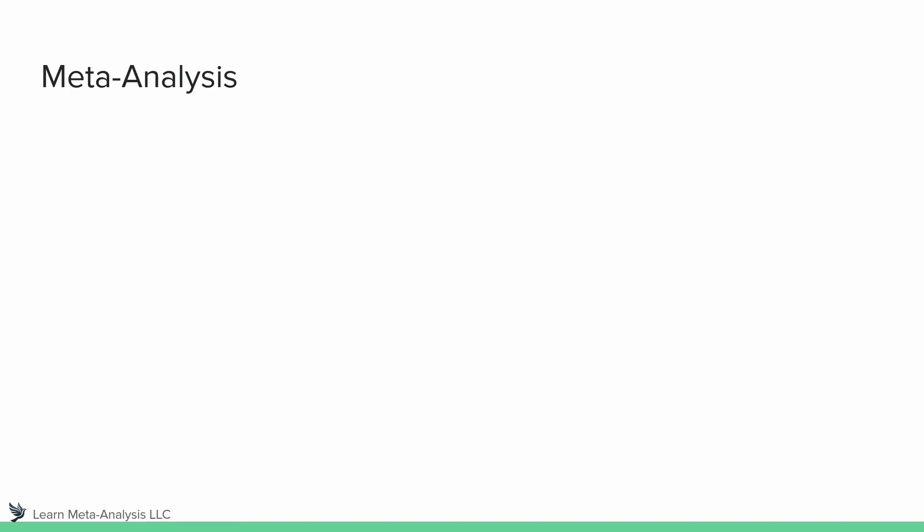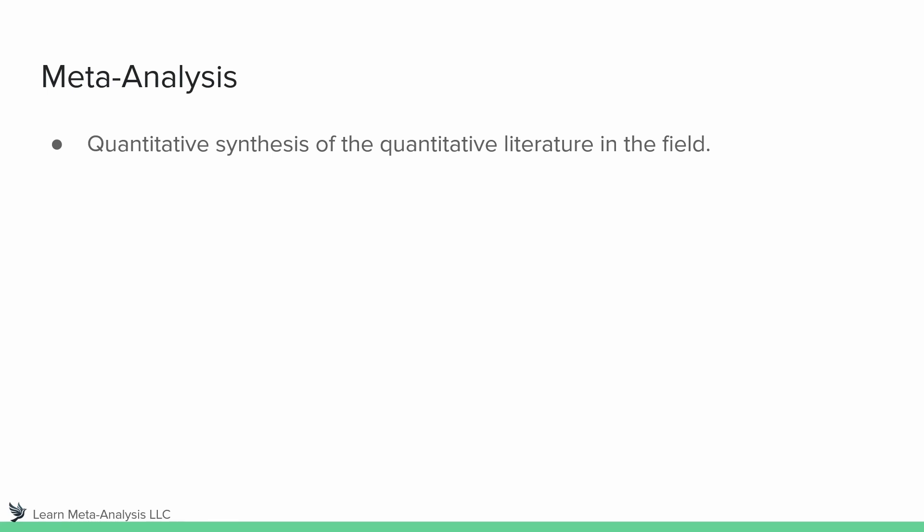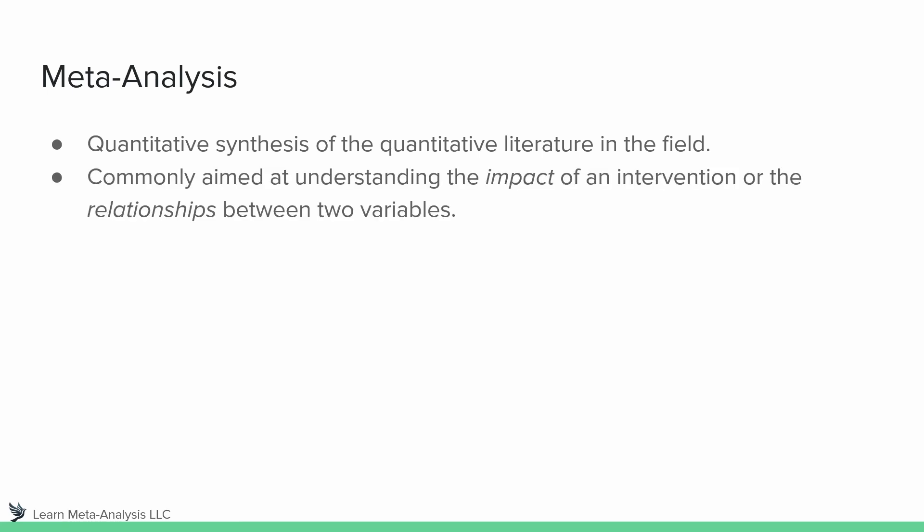Last but not least, meta-analysis. Meta-analysis conceptually is a quantitative synthesis of the quantitative literature within the field. Sometimes you'll see this term misused — meta-analysis is a specific method, and sometimes you'll see papers called a meta-analysis that are actually a systematic review. When we talk about meta-analysis, we are talking specifically about quantitative synthesis. Generally speaking, in education and educational technology, we're looking at meta-analyses for understanding the impact of an intervention or the relationships between two variables — for example, how well virtual characters work compared to other learning interventions, or relationships such as self-efficacy and learning.